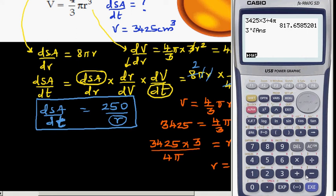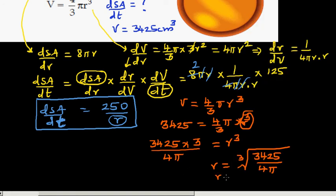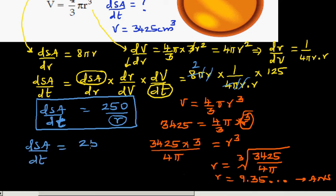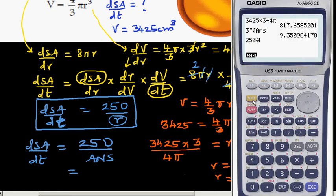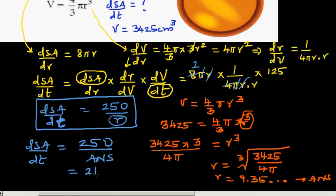The cube root gives r ≈ 9.35. So now dSA/dt = 250 ÷ r. On the calculator: 250 ÷ 9.35 = 26.7. Rounding to 1 decimal place, the answer is 26.7 centimeters squared per second.